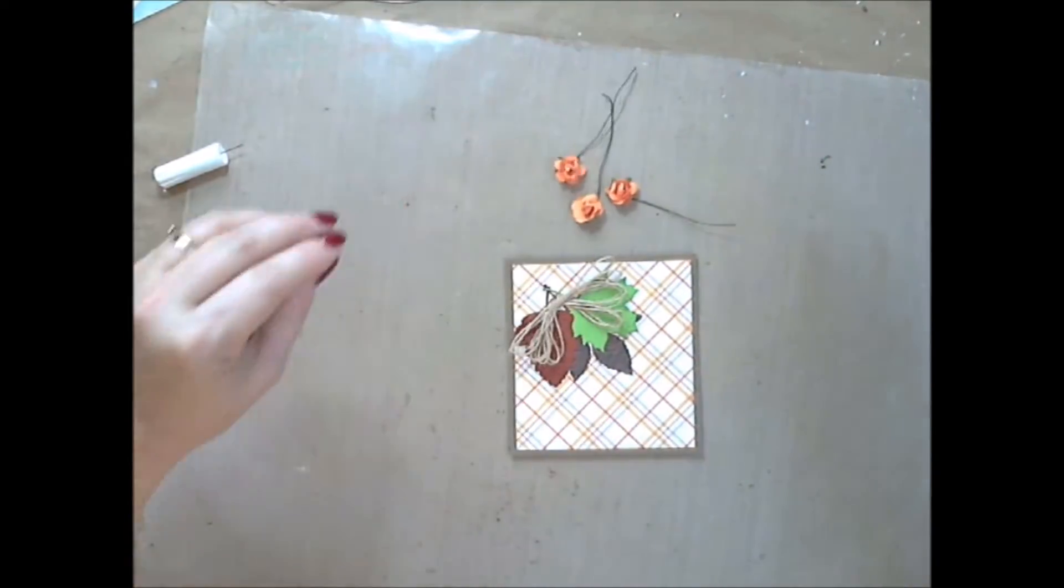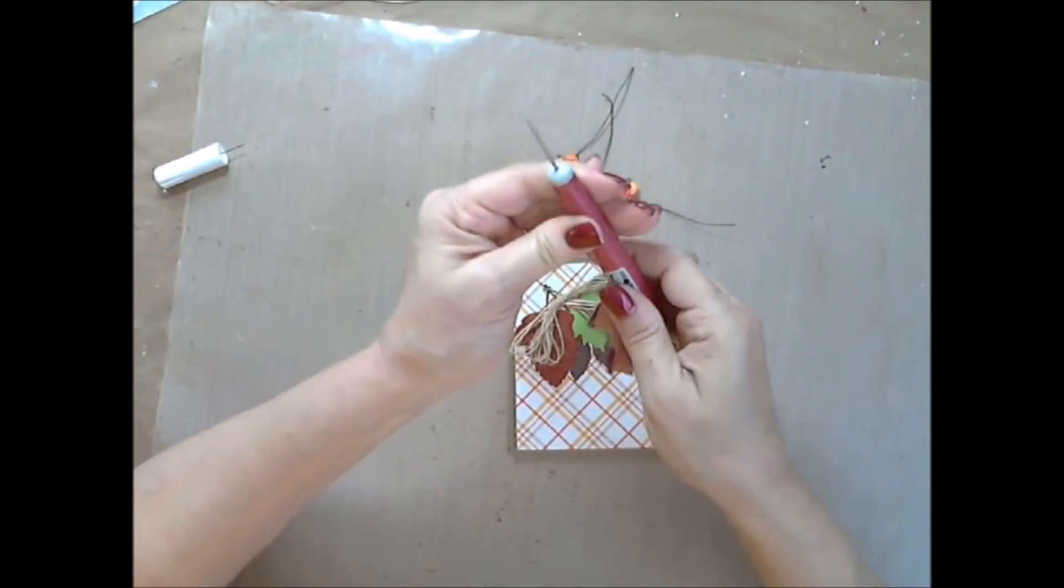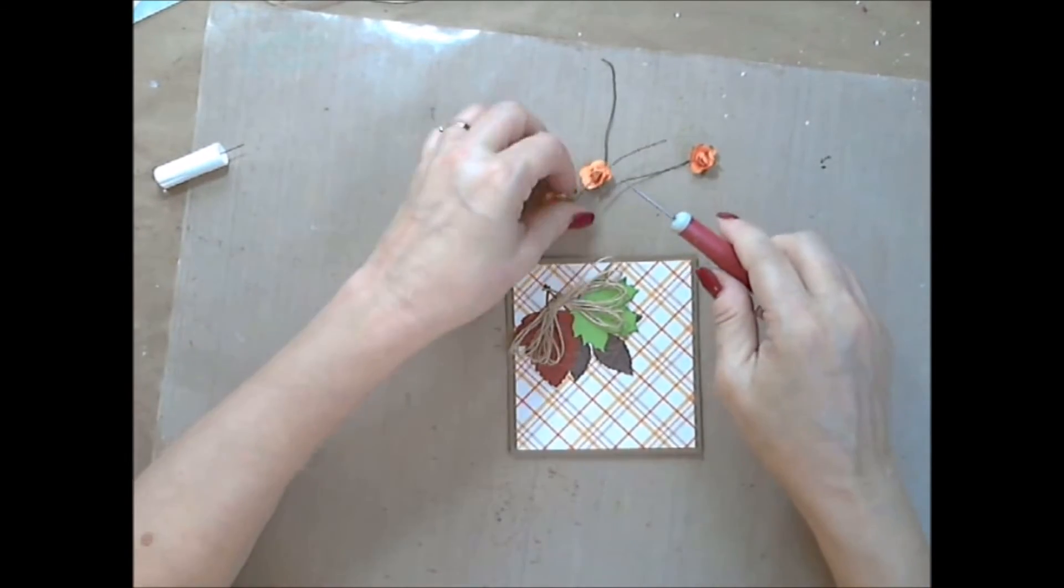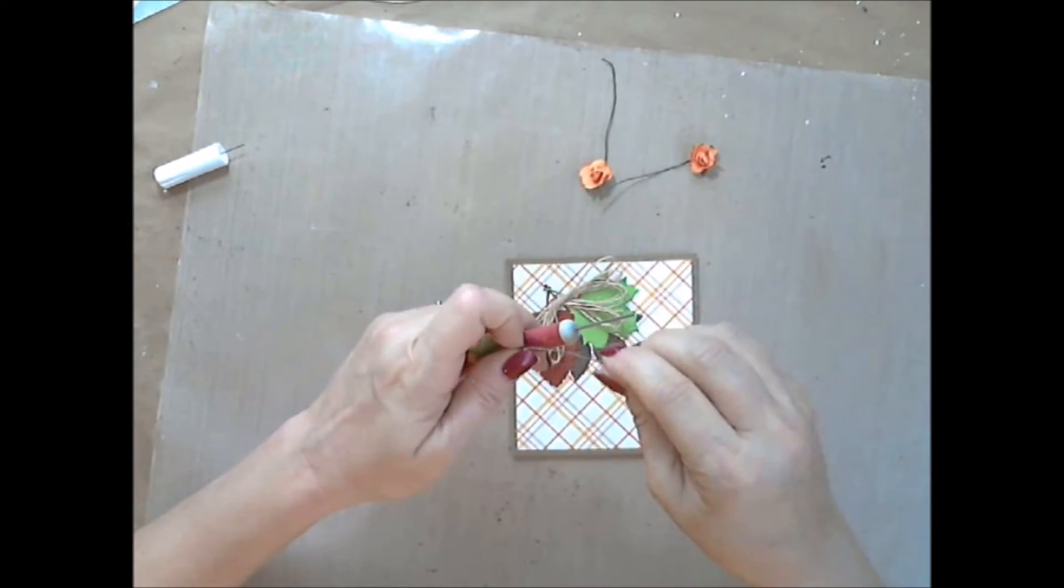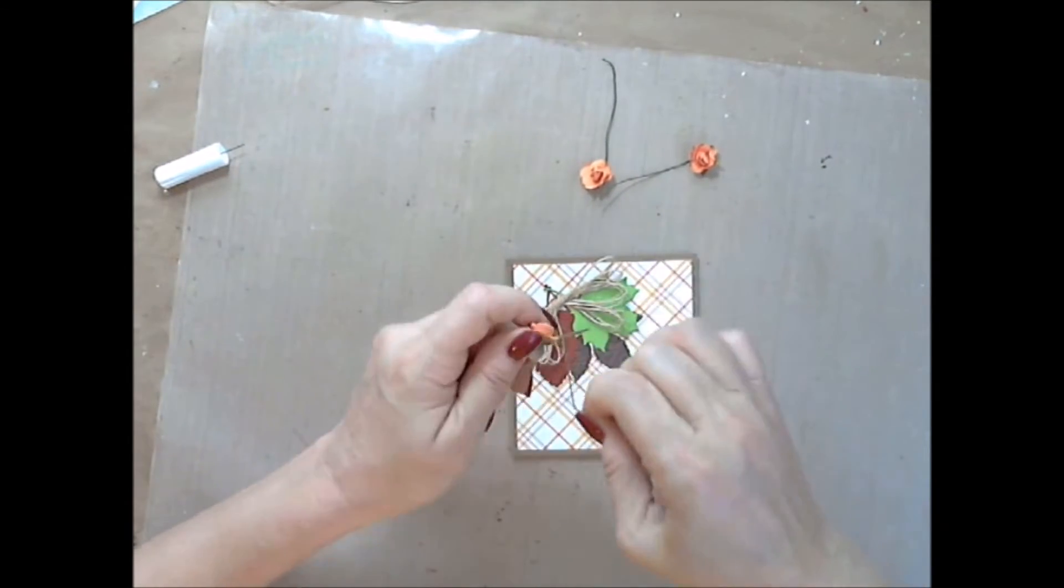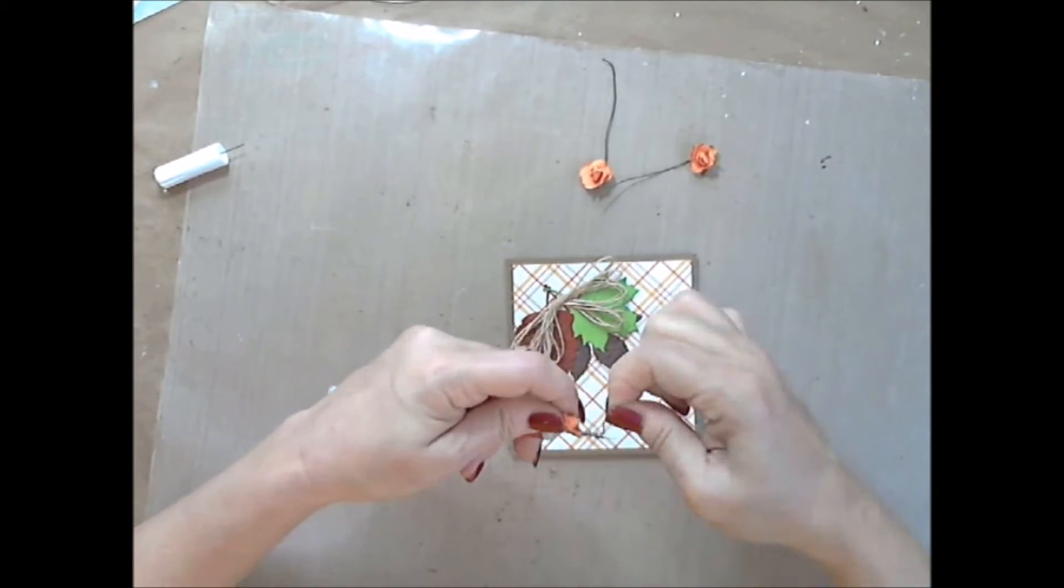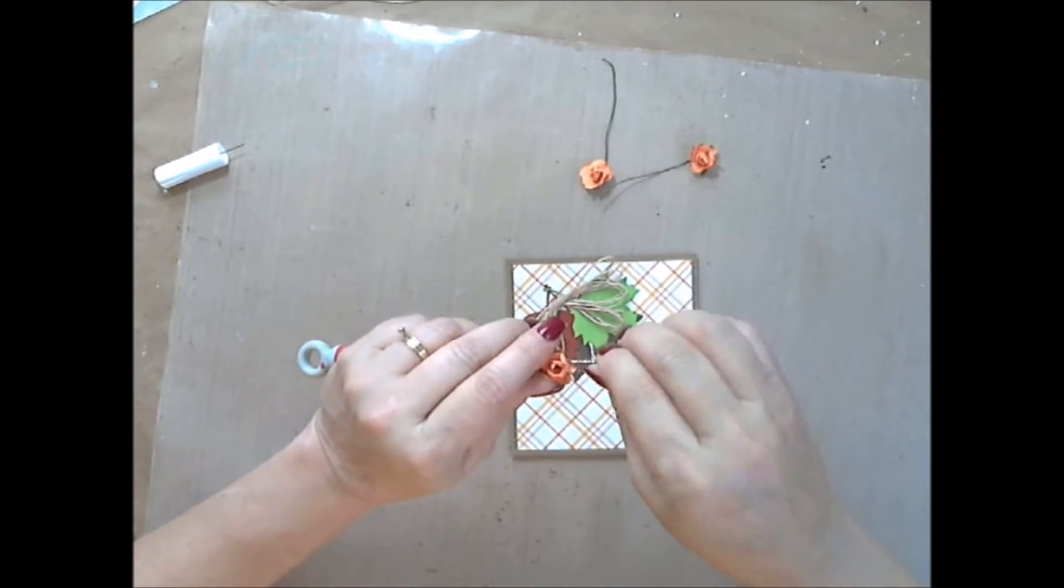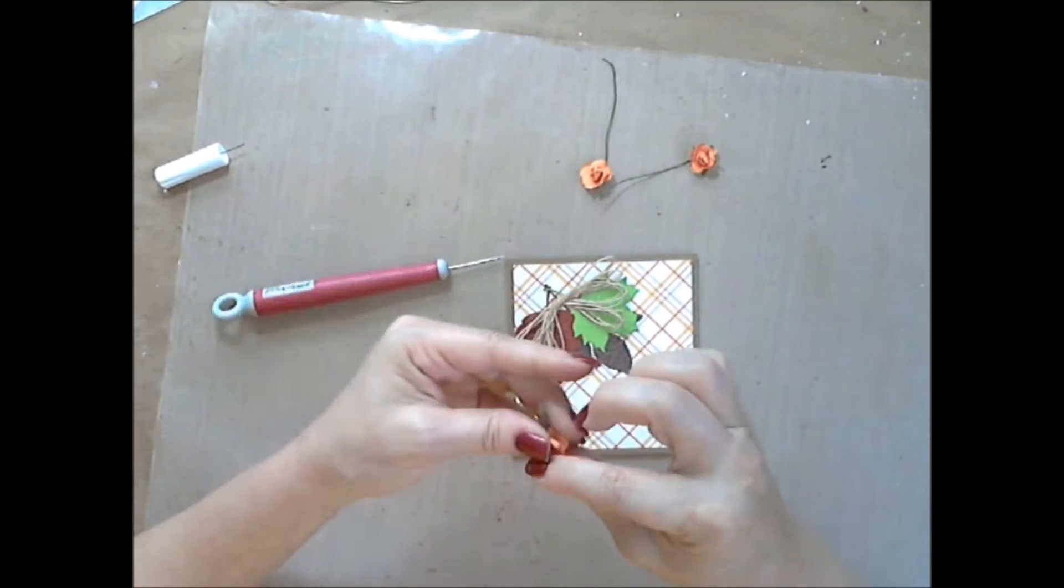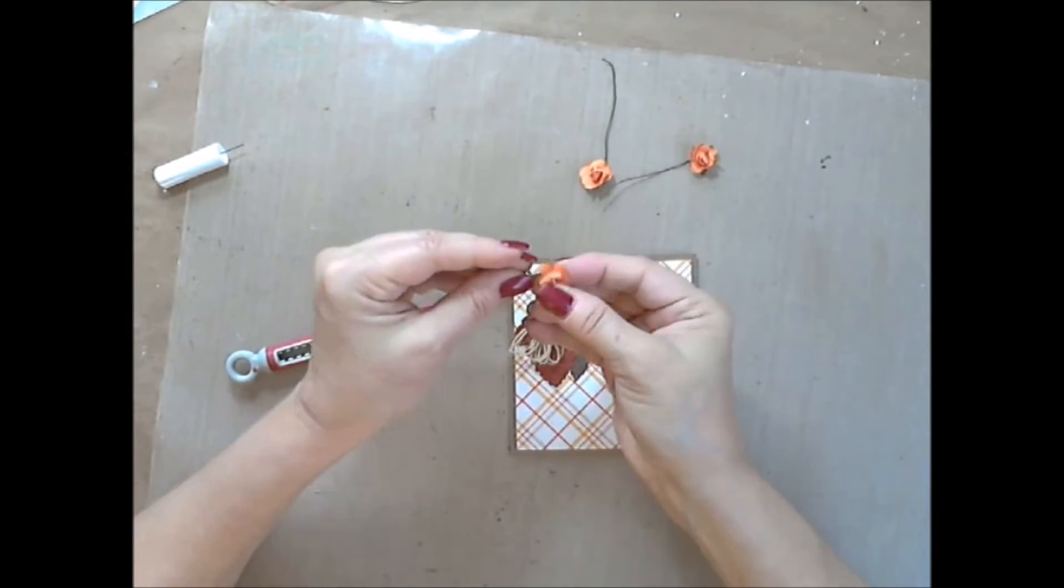These are some flowers that came in the kit, the Kaiser Craft Mini Paper Blossoms. I'm wrapping them around the Timmy Poker Tool, using that to wrap them so I can use them as little vines coming out. I just pull them apart and that adds to the card.